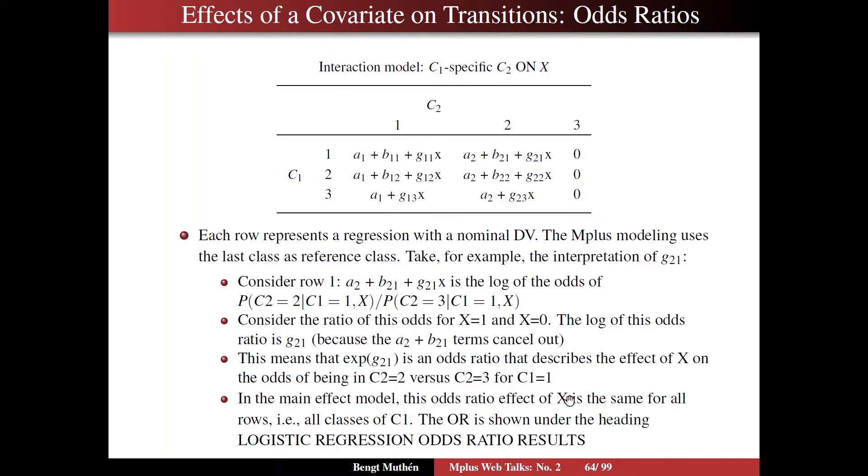So in the main effect model, this odds ratio effect of X is the same for all rows, for all classes of C1. And the odds ratio is shown under the heading logistic regression odds ratio results. Now, in many cases, you would want to compare to the last class. For instance, in the reading example, where you have at the last two time points, that is fall and spring of grade one, you want to look at the odds of compared to ending at the best class, class three, at the end of spring. But in other cases, that's perhaps not best, most interpretable way of looking at things.